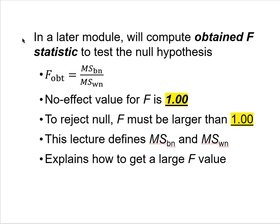In a later module we'll show you how to compute the obtained F statistic to test this null hypothesis. In broad strokes, the obtained F statistic is computed by taking the mean square between divided by the mean square within. The no-effect value for the F statistic is 1.0 — that is the value you'd expect if your independent variable had no effect on the dependent variable at all.